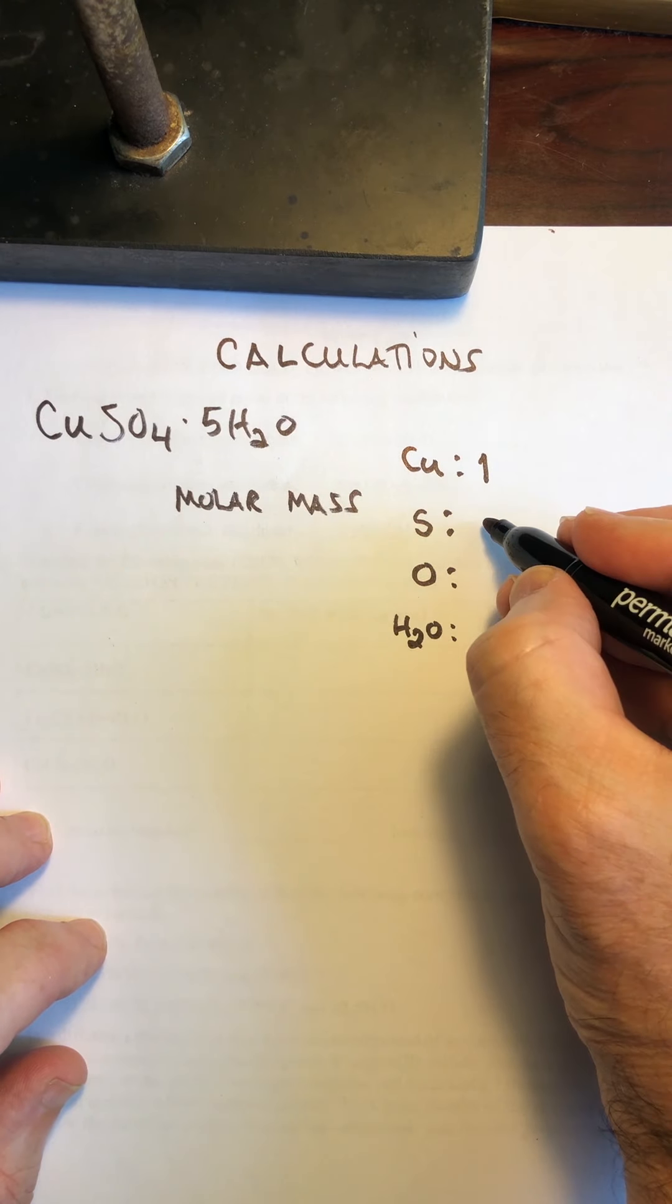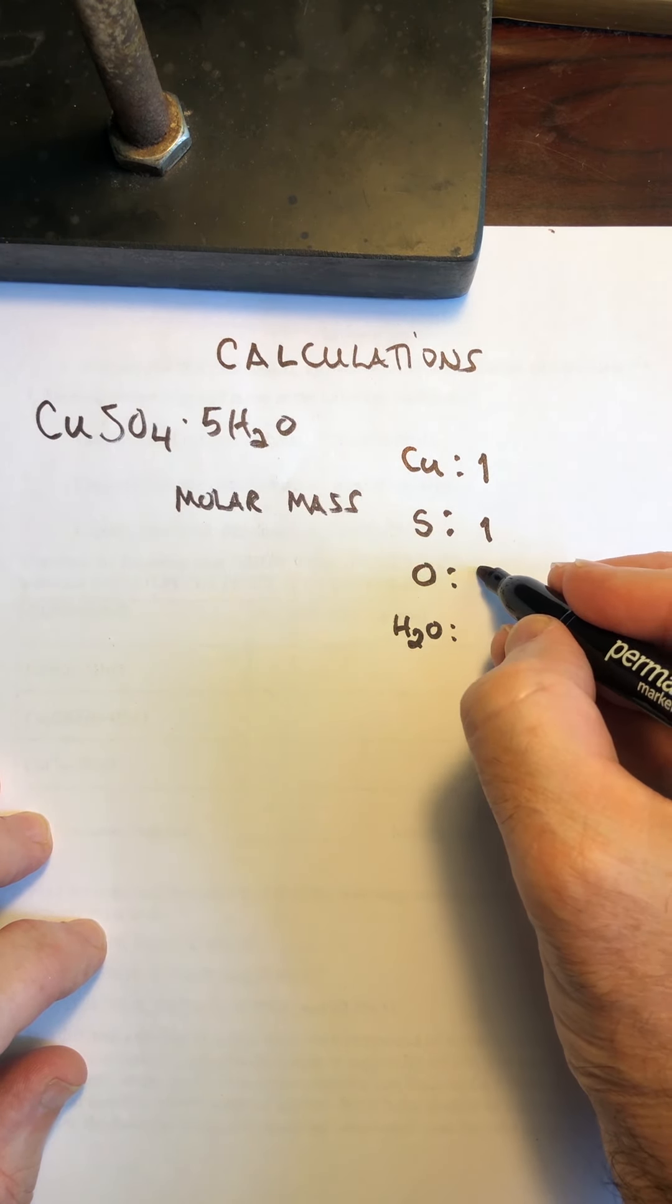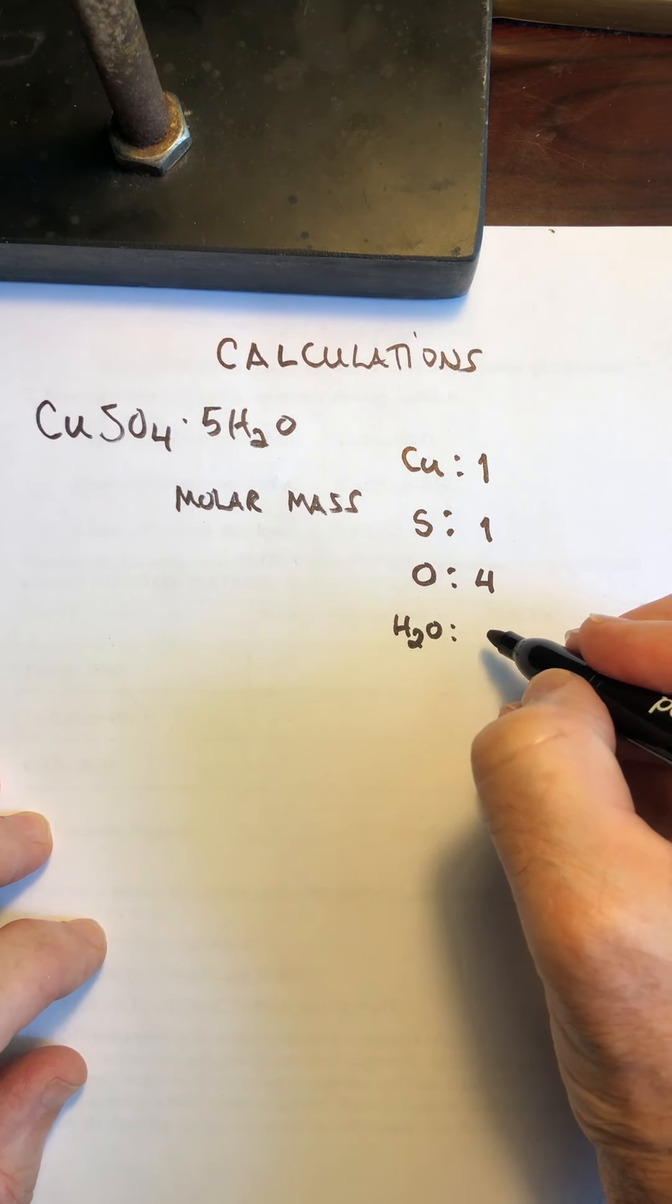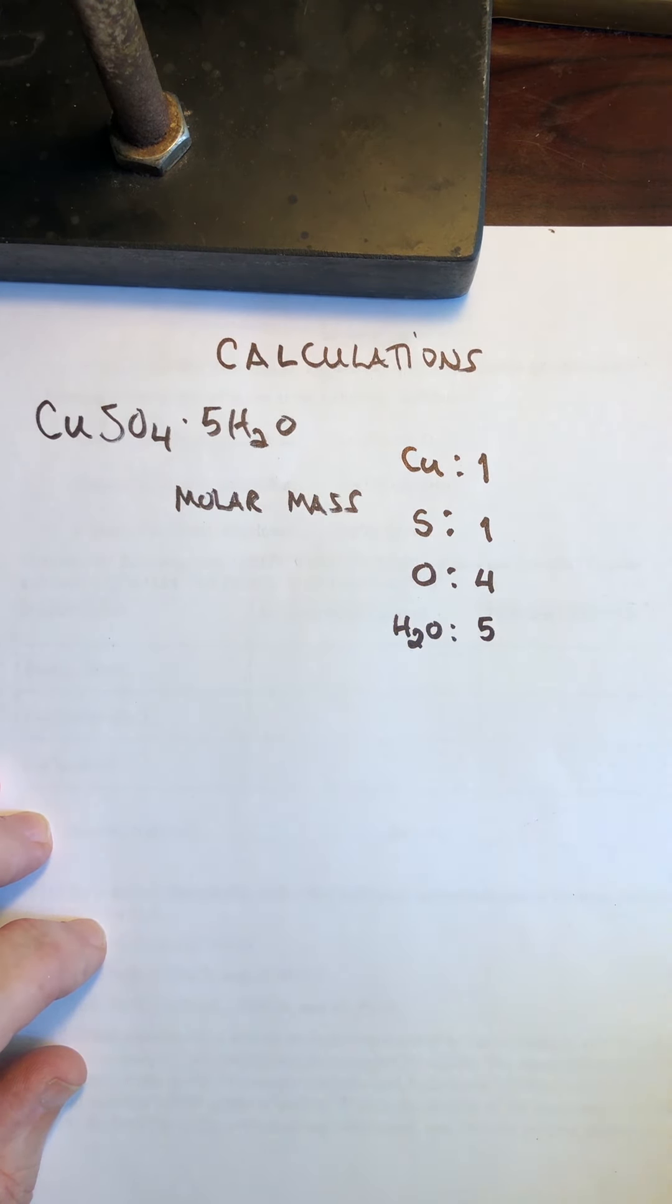one sulfur, four oxygens as part of the sulfate ion, and then five molecules of water.